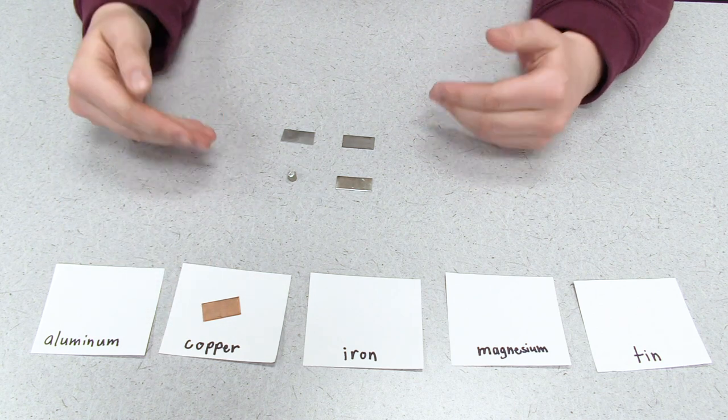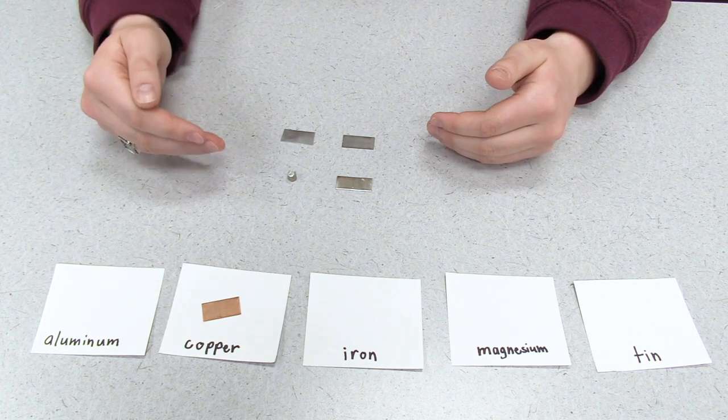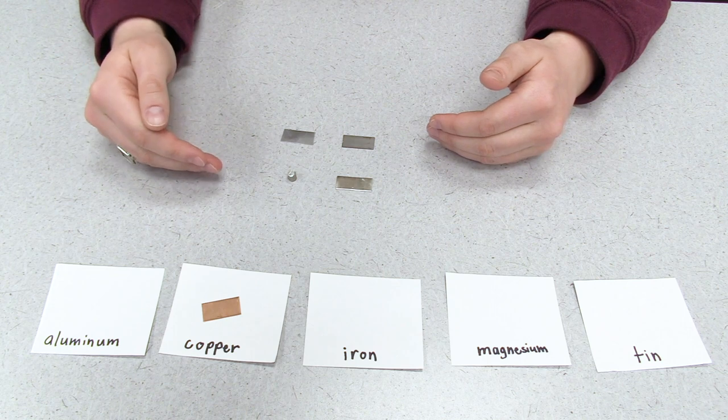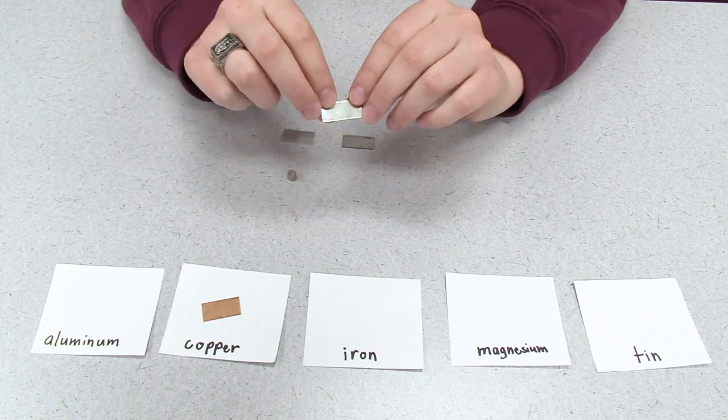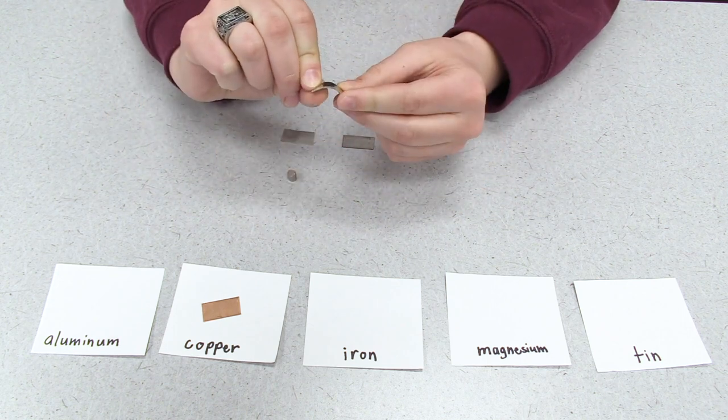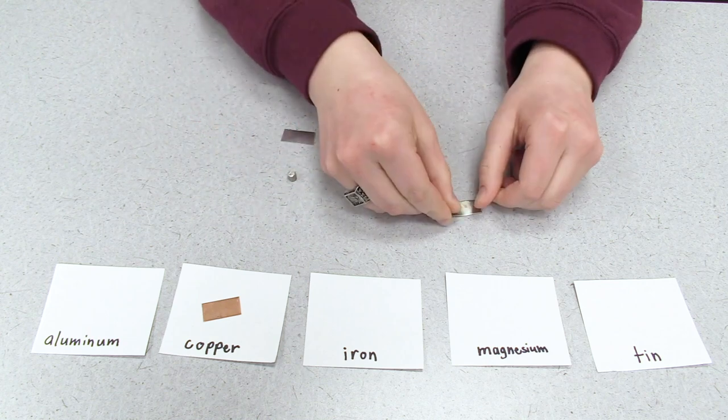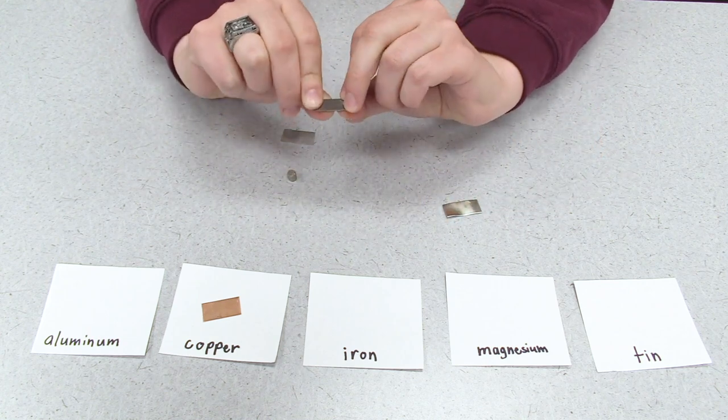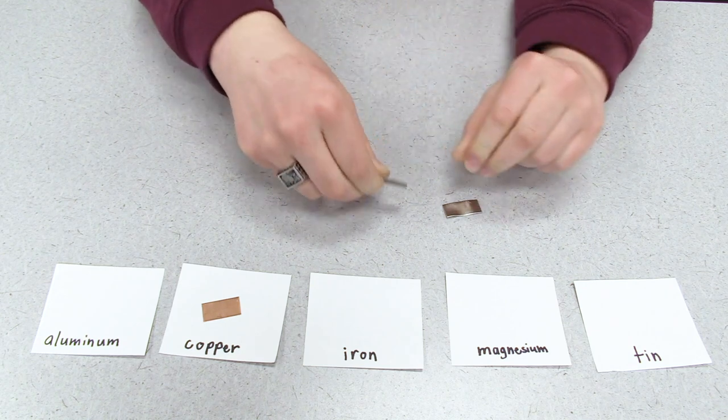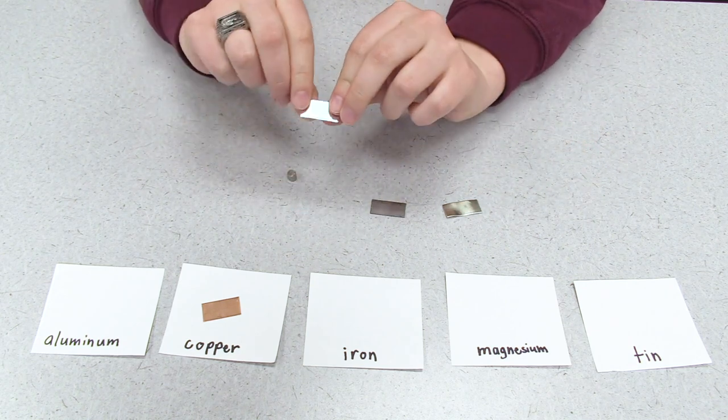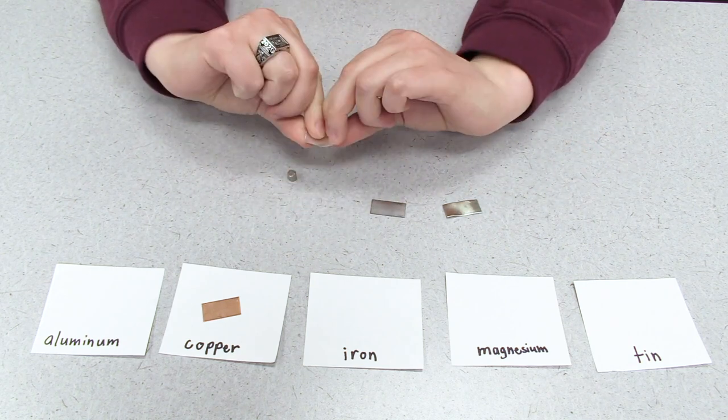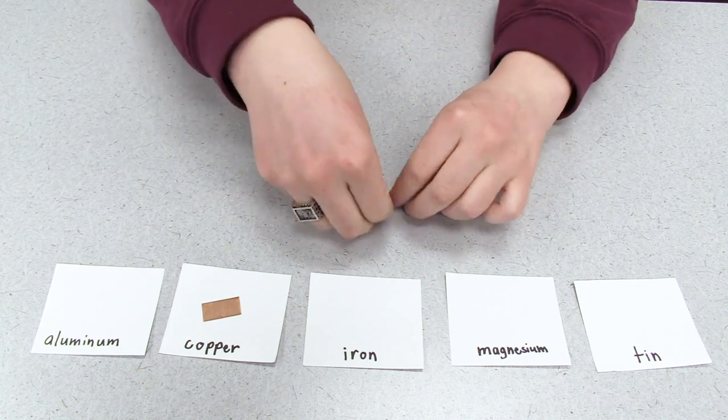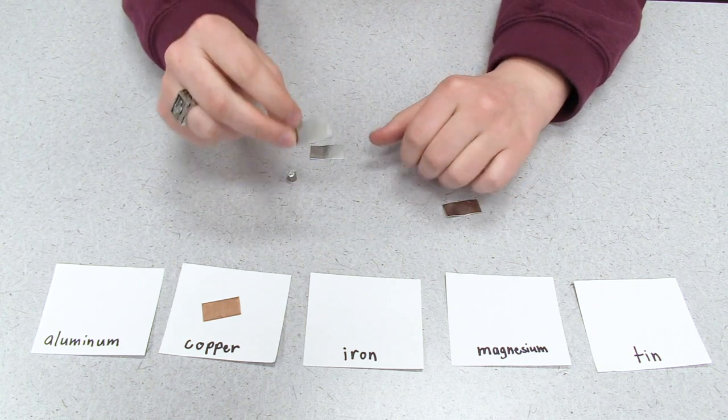Next, we're going to try to find out which sample is iron by testing how easy they are to bend. Iron will be the most difficult to bend, so this sample bends very easily just with my fingers, so it must not be iron. This sample is very difficult. I can hardly get it to bend at all with my fingers, and this sample also bends fairly easily just using my fingers, so we know that this sample, the hardest to bend, must be iron.